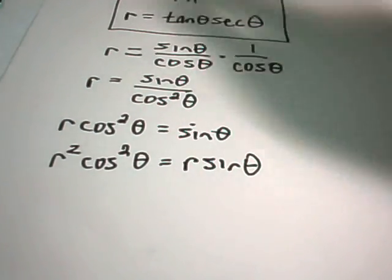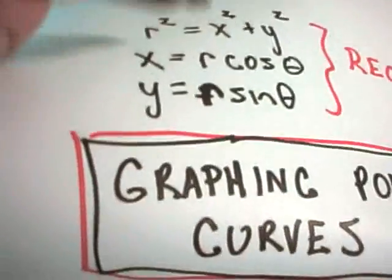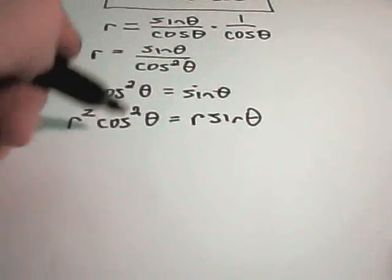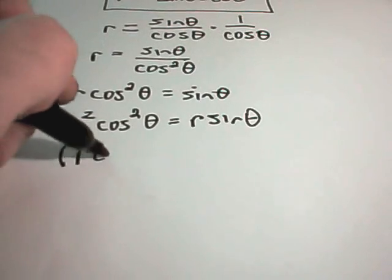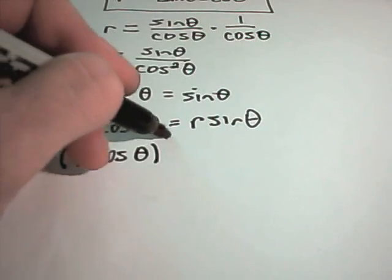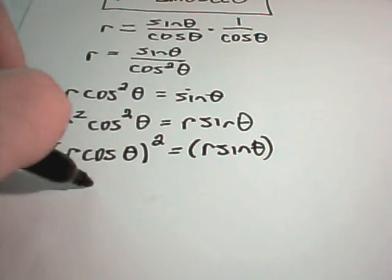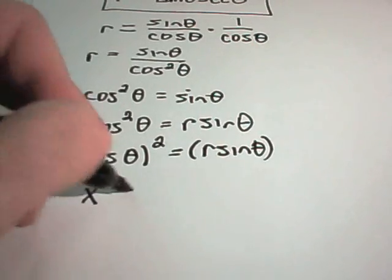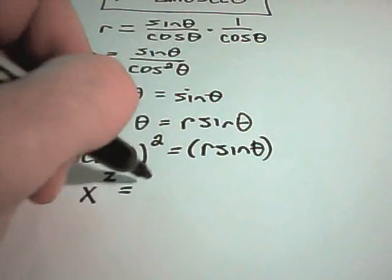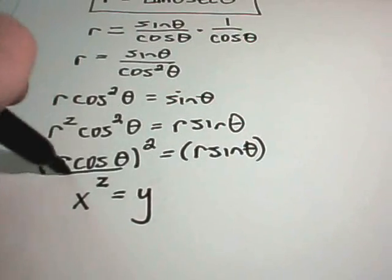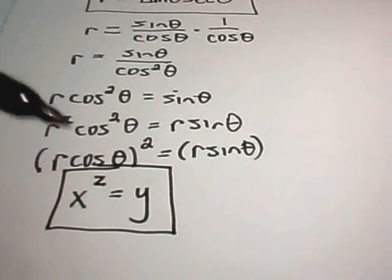And the reason I'm doing that is because notice now I've got an r sine theta on the right side, so I can replace that with y. I've really got an r cosine theta on the left if I write it as r cosine of theta squared. So that's equal to r sine of theta. We know that r cosine of theta, that's the same thing as x squared. r sine of theta is y.